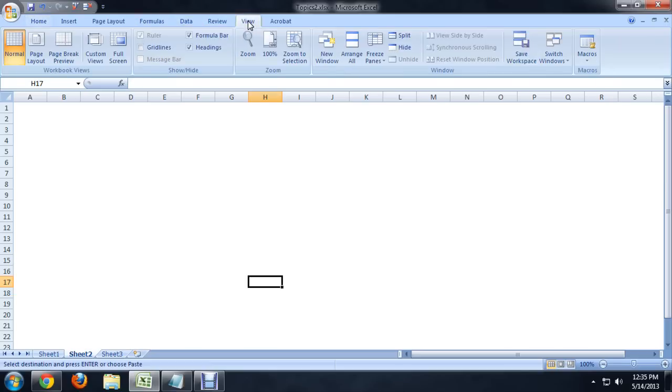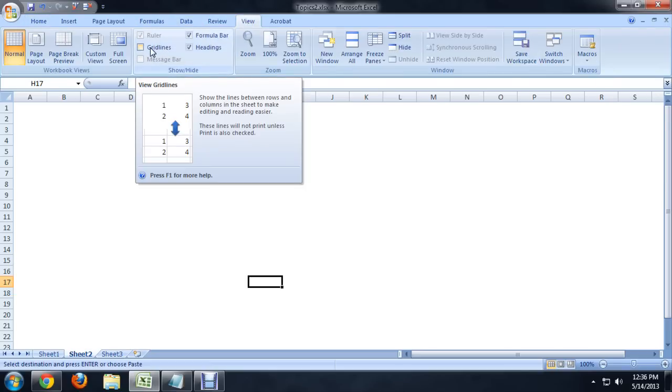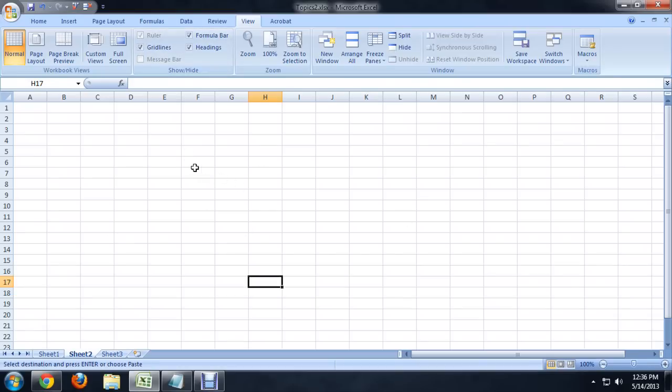So, if we come over here to the View tab, you can see this little check box that says grid lines is unchecked. This is easy to do by accident if you're moving kind of quick through the different view options. And if we just click on that, it brings all of the default grid lines back.